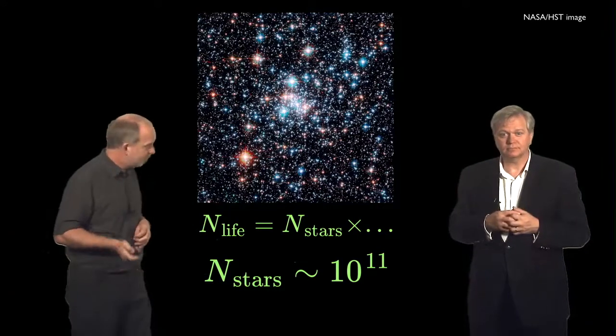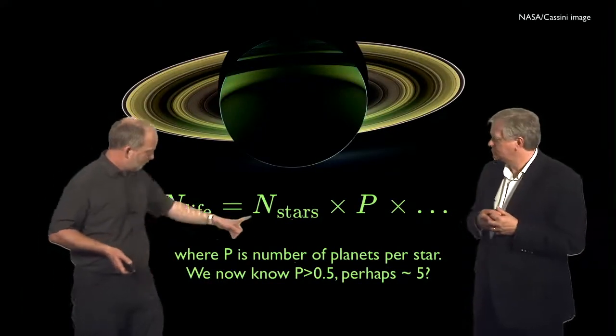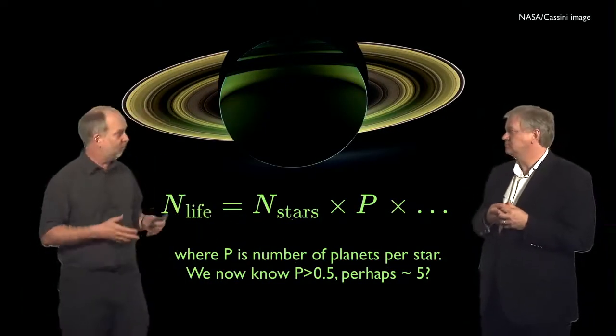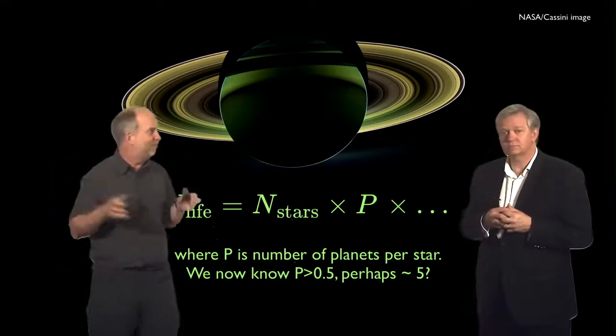But let's keep on with our terminology. So we now get to the next term. Stars are all very good, but a star that doesn't have planets, you're not going to get life there. Let's get some sort of strange plasma being that lives in the surface of a star. But life as we know it is going to require planets.